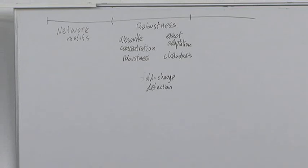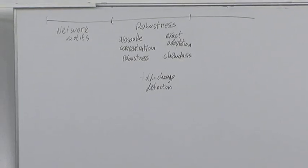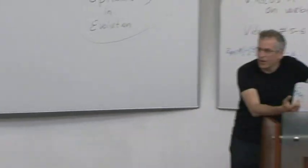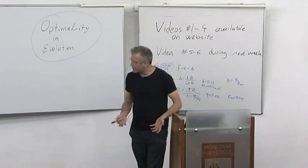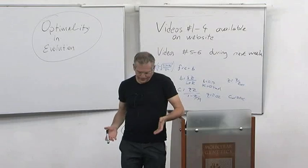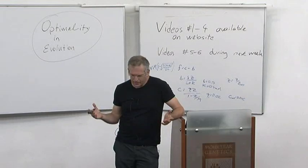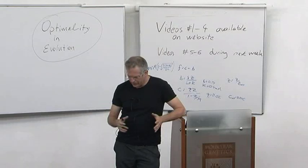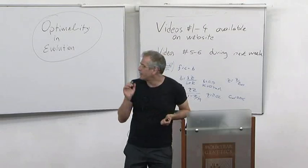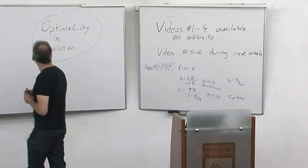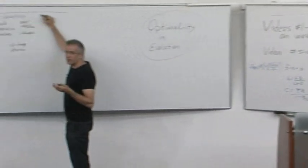We talked about how circuits can detect relative changes and be robust to factors that multiply out the input field, like ambient light in vision, source strength in bacterial chemotaxis, or variations of protein levels in human cells. With all these network motifs and circuits that give robustness, you might wonder: who made them? How did they come to be? How are they so beautiful and perfect?